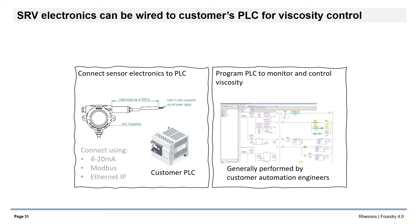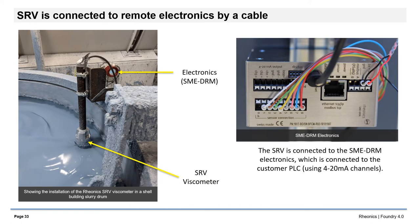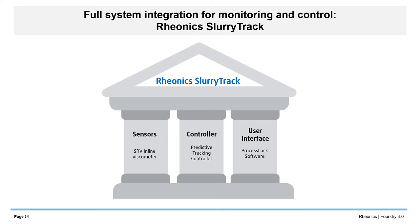Here are the components of the system: SRV sensor, Slurry Track predictive controller, and optionally, control valves for dosing slurry diluents or other additives. In this first integration option, the sensor is connected to the customer's PLC by any one of a number of interfaces. The PLC is programmed by customer automation engineers to fit the specific measurement and control requirements of the customer. A solenoid valve can be controlled by the PLC to dose additives to correct viscosity. In the remote connection option, the sensor is connected by a cable to the electronics package, which may be located along with the customer's PLC.